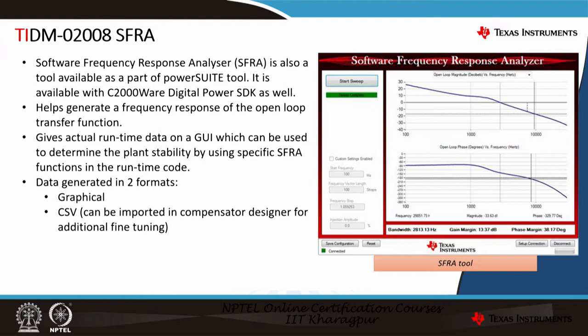The data is generated in two formats: one is graphical as shown in the picture, and the other is CSV format that can be imported into the compensator designer for additional fine-tuning. Whatever you design in the compensator designer is theoretical and may not be exactly replicated in the actual system because of limitations like capacitor value or inductor value. There may be other design parameters affecting the actual compensator. This SFRA-based closed-loop performance can help fine-tune your closed-loop control.